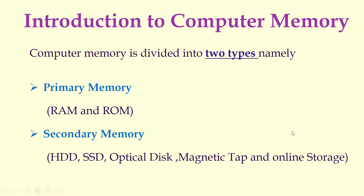Now we are going to see each one by one. Computer memory is divided into two types: primary memory, which includes RAM and ROM, and secondary memory, which includes hard disk, SSD, optical disk, magnetic tape, and online storage.